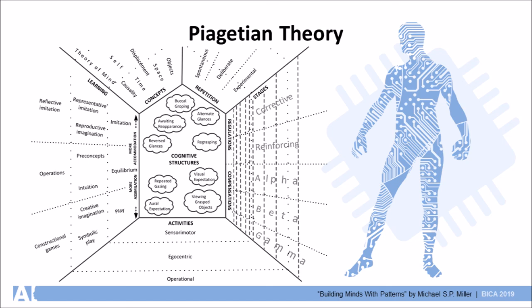Piaget moreover saw that the individual's world was built through interactions with the world in a two-fold process of play, which assimilated elements of the outside world into the mind of the individual, and imitation, which accommodated or conformed the individual to the nuances of the world.